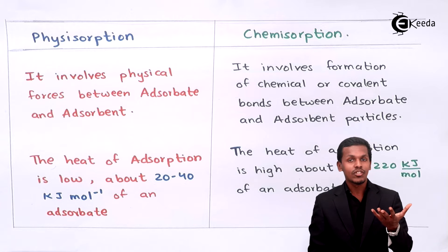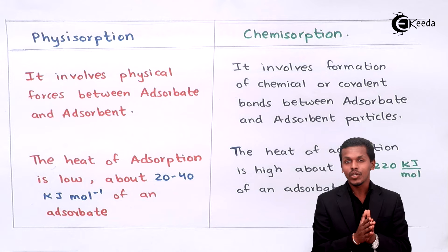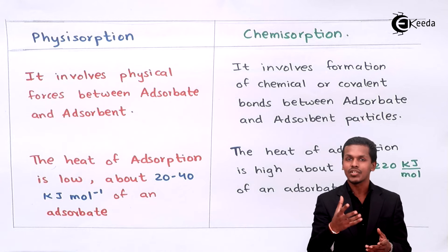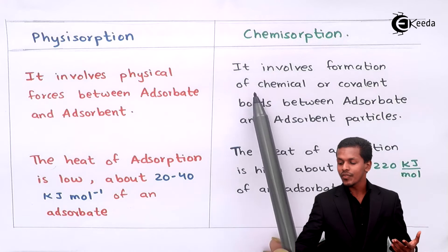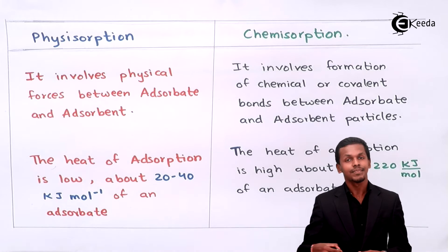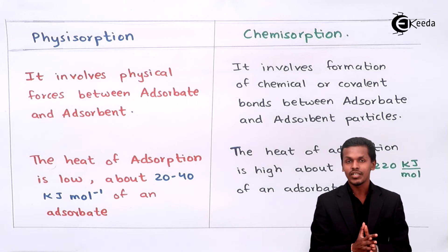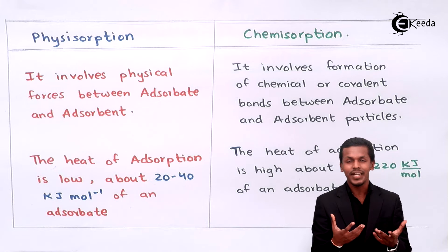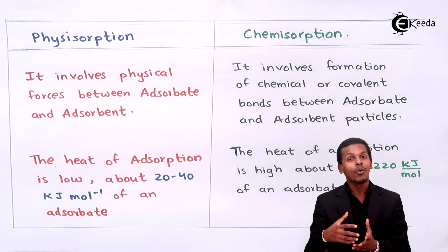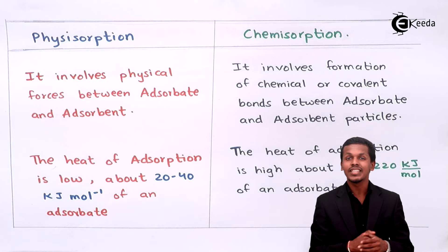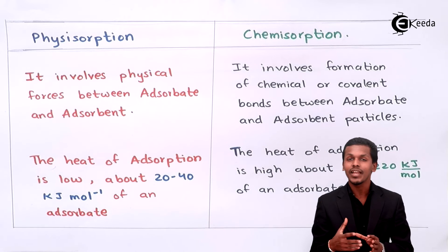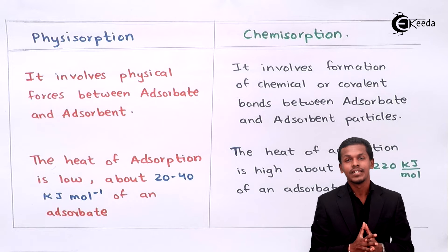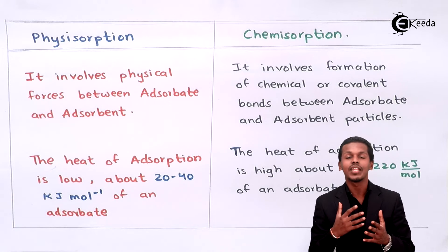The adsorbent and adsorbate are attracted towards each other depending on factors like pressure and temperature. In contrast, chemisorption involves the formation of a chemical or covalent bond between the adsorbate and adsorbent particles. Because of this, the force of attraction is very strong. In physical adsorption the interaction is very weak, while in chemical adsorption the force of attachment is very strong.